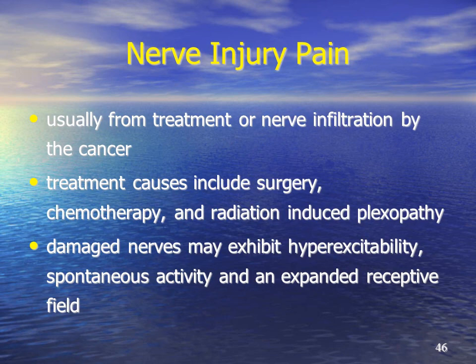Nerve injury pain, on the other hand, can be associated with treatment or nerve infiltration by the cancer. This denotes a more intimate involvement between the cancer and the nerve structures. Treatment causes can include surgery such as post-thoracotomy syndromes or post-mastectomy syndromes, chemotherapy causing peripheral neuropathies that become significant and painful, and also to a much less common degree radiation-induced plexopathies.